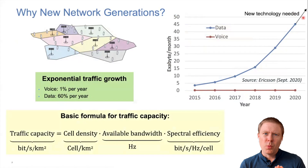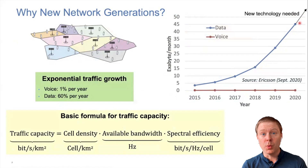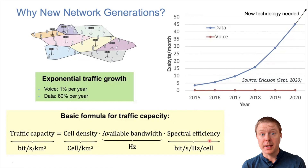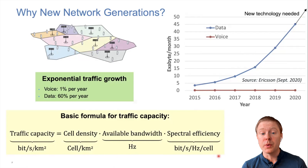When designing a new network generation to deliver more data to more users, the number of bits per square kilometer is given by three factors: the cell density — the number of base stations per square kilometer; the available frequency bandwidth; and the spectral efficiency, measured in bits per second per hertz per base station. We play with all three of these factors when building future networks.